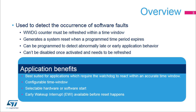The window watchdog can be programmed to detect abnormally late or early application behavior. Once enabled, it can only be disabled by a device reset. It is best suited for applications required to react within an accurate timing window. This time window is configurable and can be adjusted according to various use cases. The window watchdog can be configured to start either by hardware or software via the option bytes.